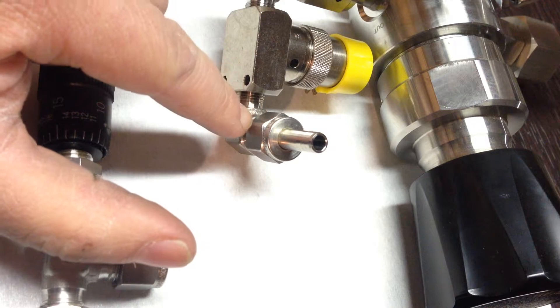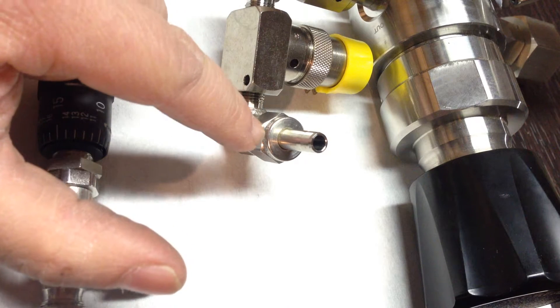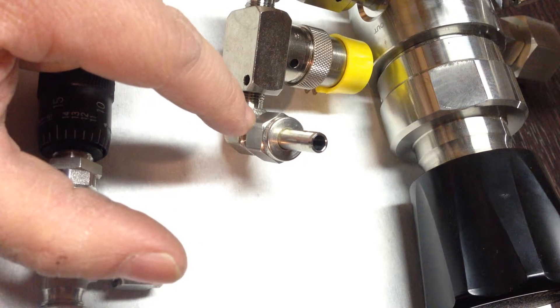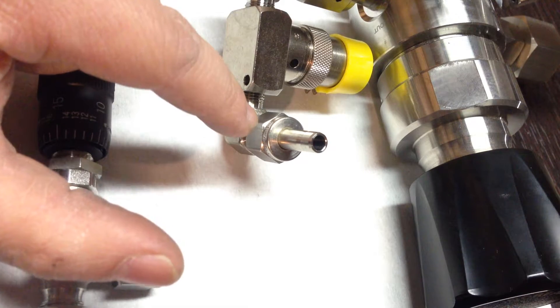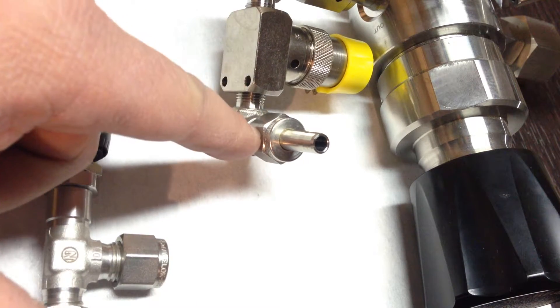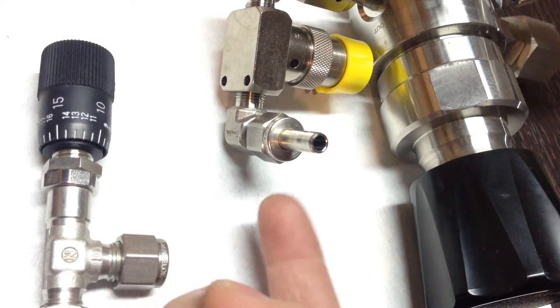You could tighten this one hand tight first and then you tighten it with a wrench 75% or 3/4. So you tighten it here all the way around until it's here.